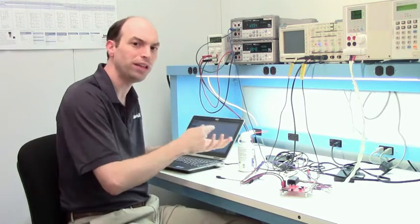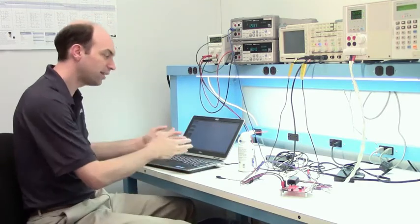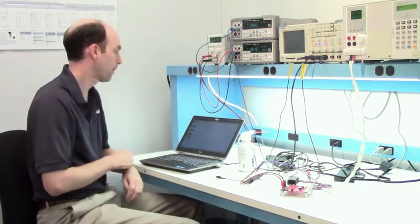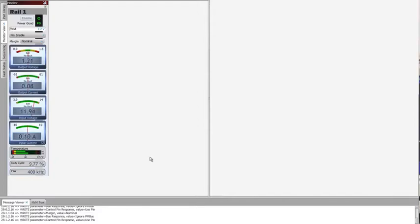If we take a look at the GUI, we can see exactly the real time measurements. The GUI is monitoring the five key parameters we were looking for on the board: the output voltage, the output current, the input voltage, the input current, along with the temperature of the IC.